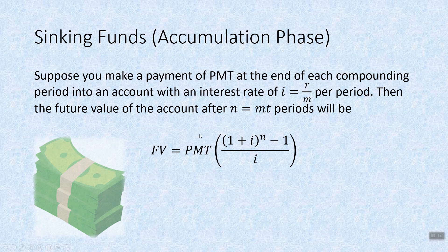We had part of this in compound interest, but we don't call it present value anymore because there's more going on — there's no lump sum deposit. We're contributing small amounts all the time and growing this account. The minus one in the numerator and the i in the denominator — trust me, you don't want to know the development of this formula. This is how we know we're using payment and not just straightforward compound interest.